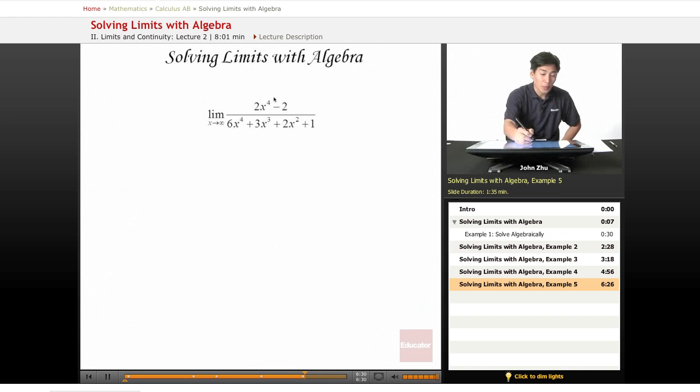So let's look at another example, but this time with the leading coefficients equal in the numerator and denominator. Their degrees are equal. So right here we have x to the fourth and x to the fourth.